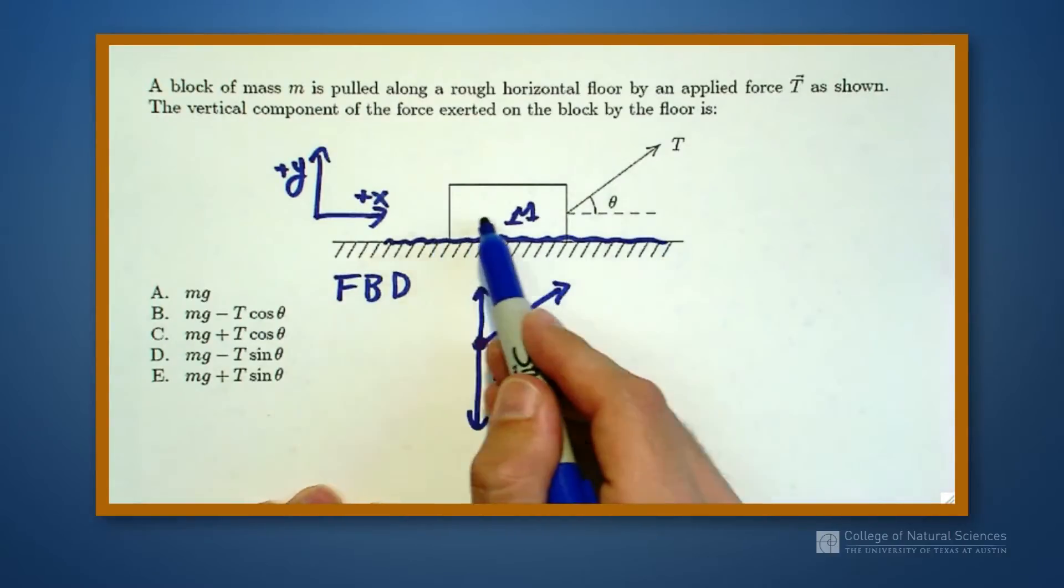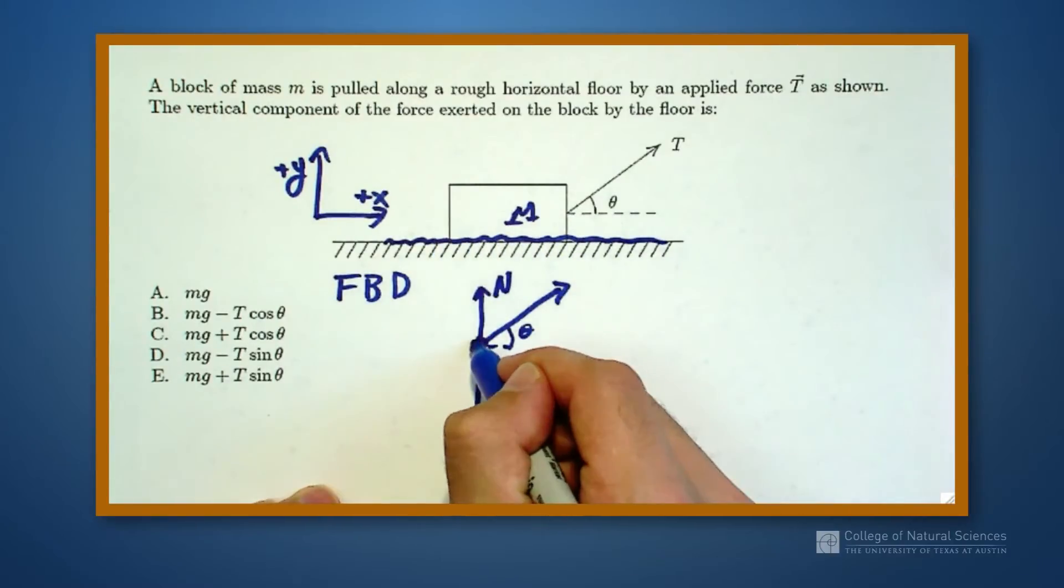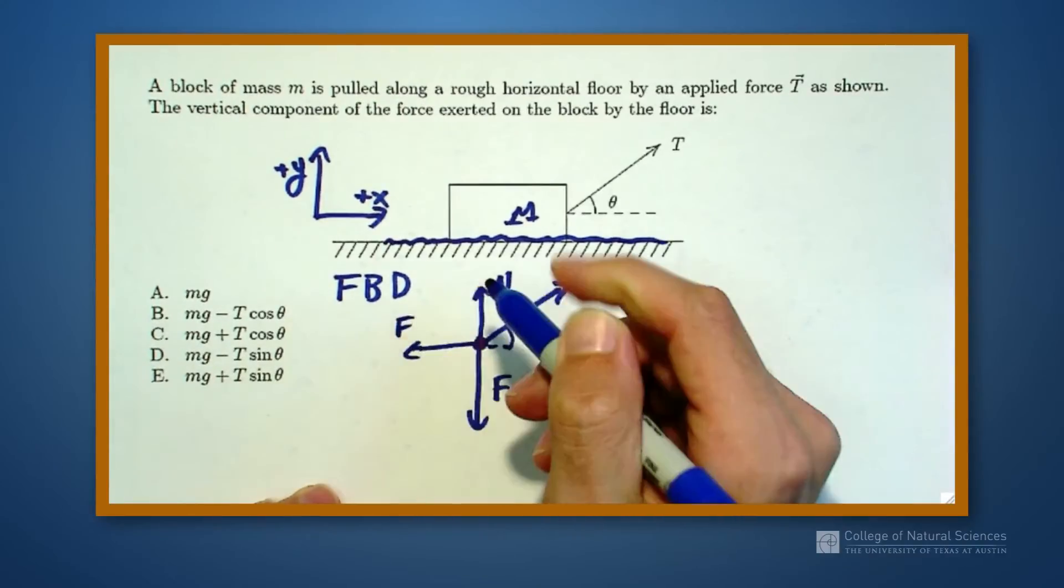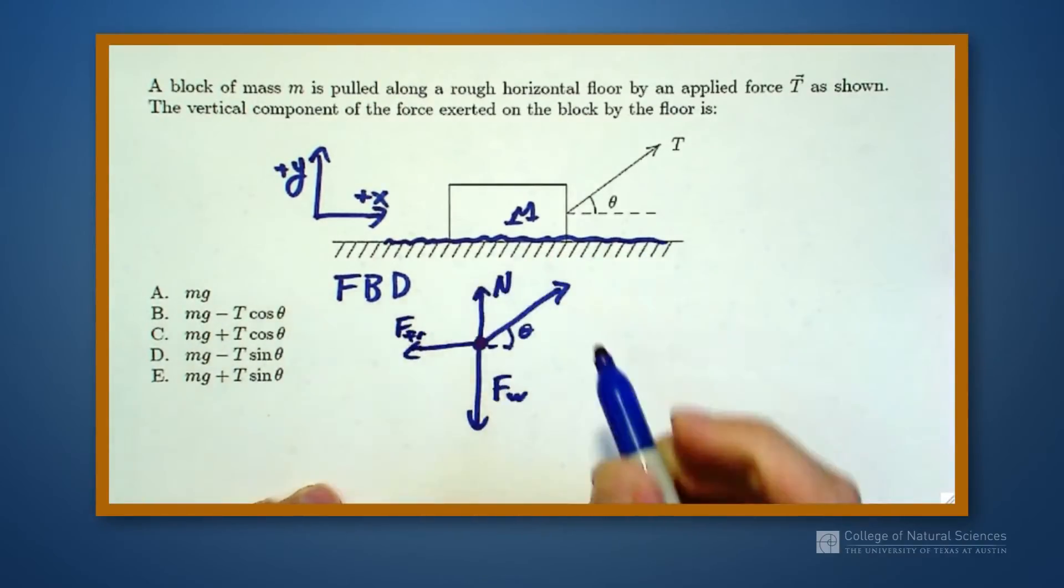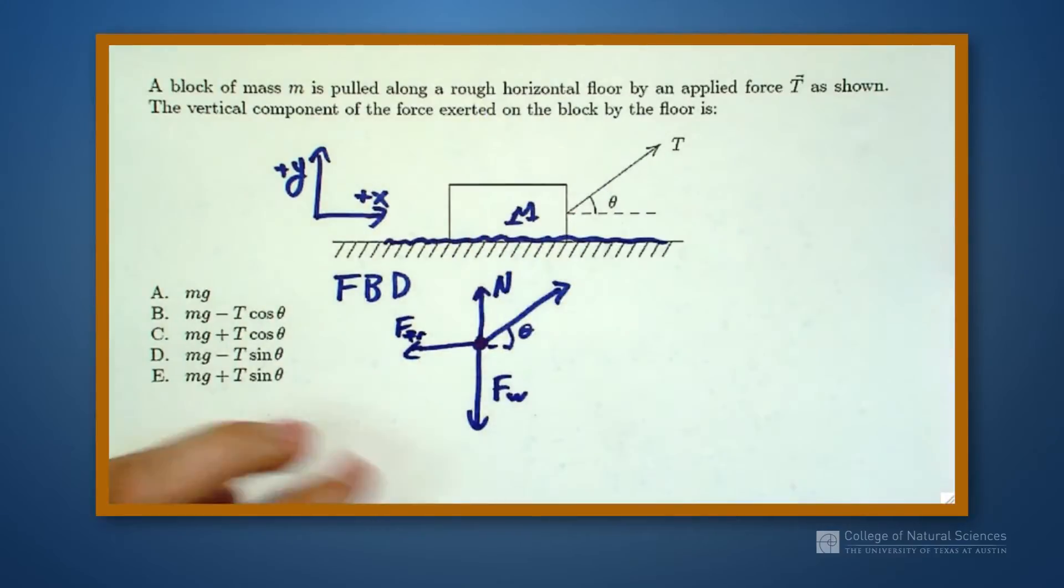And there's another one. If we're pulling it along in this direction, we're going to actually get in this backwards direction a resistive force, a friction force, because of the rough horizontal surface.